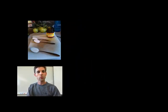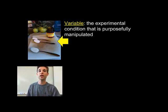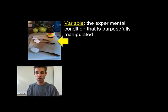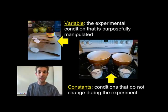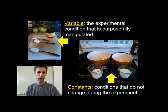The thing I'm actually manipulating in my experiment is called the variable. In this case, it's the yeast — the experimental condition I'm purposefully changing. One loaf of bread is going to get one tablespoon of yeast; the other loaf is going to get two tablespoons of yeast. That's my variable. But everything else I hold constant. Constants are things that help control for anything else that would lead us to make invalid conclusions about our hypothesis.